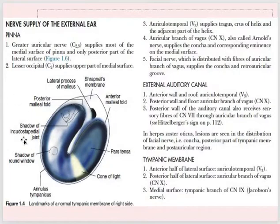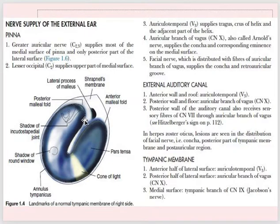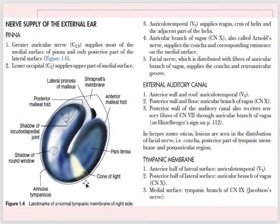When we examine the ear and do otoscopy, what we see is the tympanic membrane. We can see the landmarks of the tympanic membrane — a shadow of the round window, and a cone of light. This part is called the pars tensa. This is also the nerve supply diagram of the external ear.